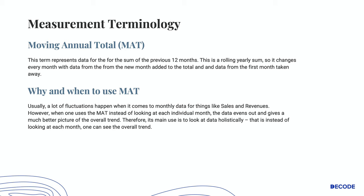The first one is MAT, or Moving Annual Total. This term represents data for the sum of the previous 12 months. This is a rolling yearly sum, so it changes every month — with data from the new month added to the total and data from the first month taken away. Usually a lot of fluctuations happen with monthly data for things like sales and revenues. However, when one uses MAT instead of looking at each individual month, the data evens out and gives a much better picture of the overall trend. Its main use is to look at data holistically, seeing the overall trend emerging from the data.